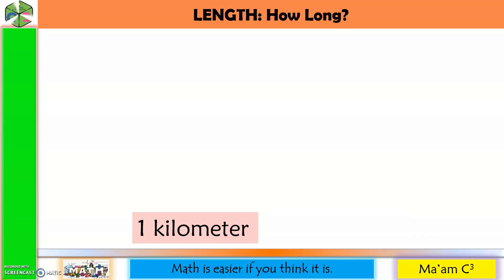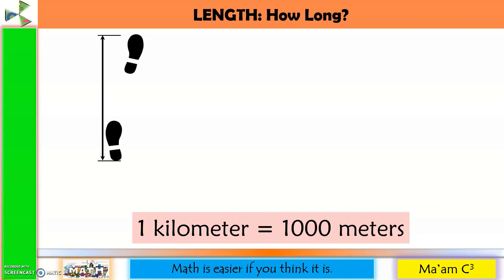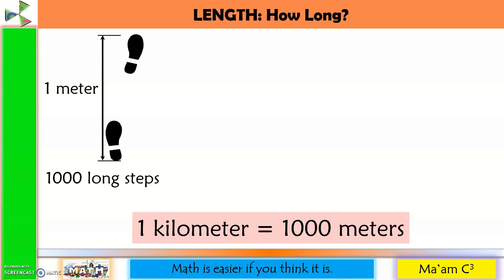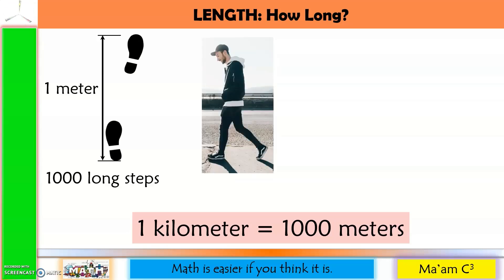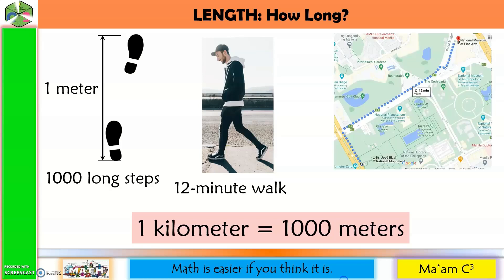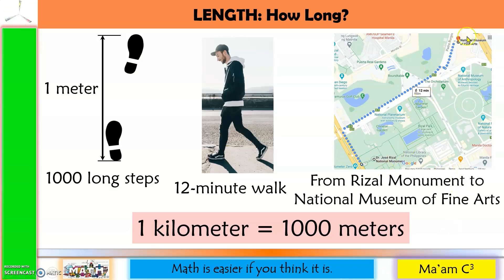One kilometer equals 1,000 meters. A long step of an adult is approximately 1 meter, so 1,000 long steps equals 1 kilometer. When walking on a flat surface with no hurdles, 1 kilometer is approximately a 12-minute walk — for example, the distance from the monument of Dr. Jose Rizal at Luneta Park to the National Museum of Fine Arts.